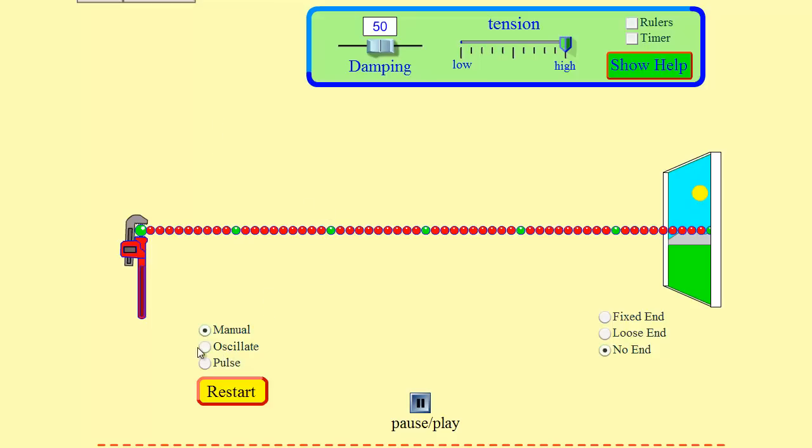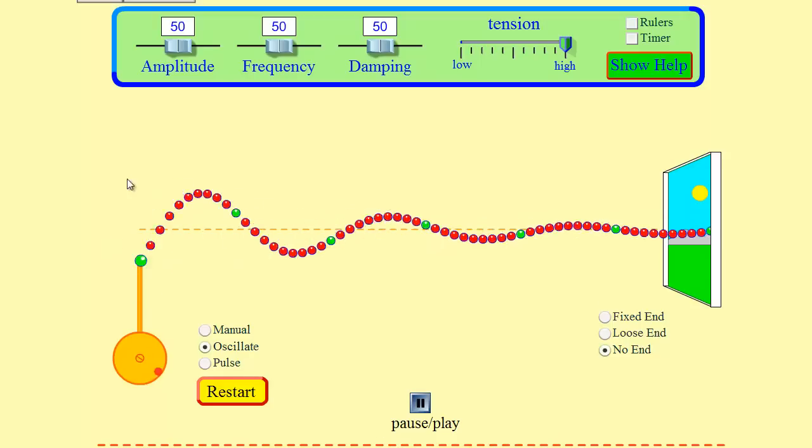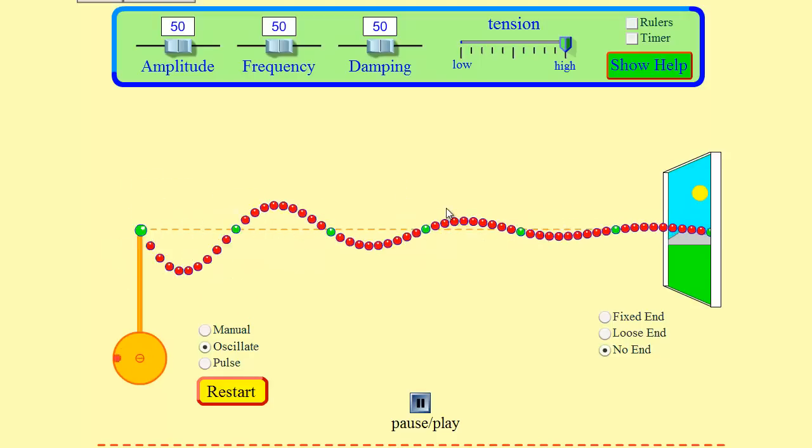First of all, we'll start by oscillating the end. Again, we're creating a transverse wave. We can see that the disturbance is perpendicular to the direction the wave is traveling.